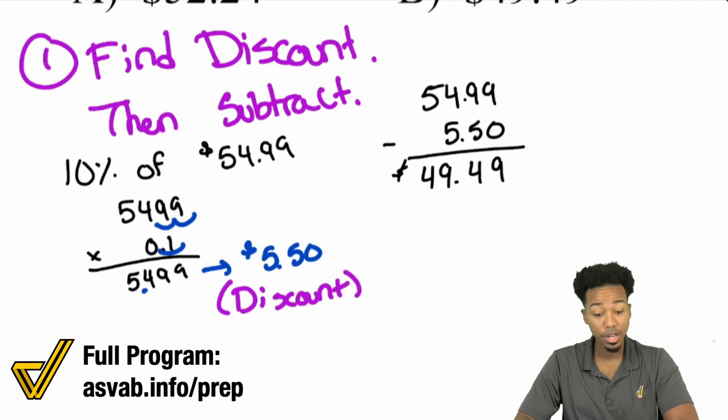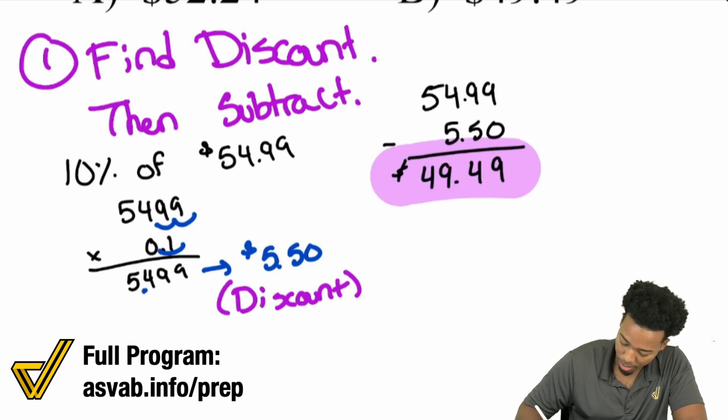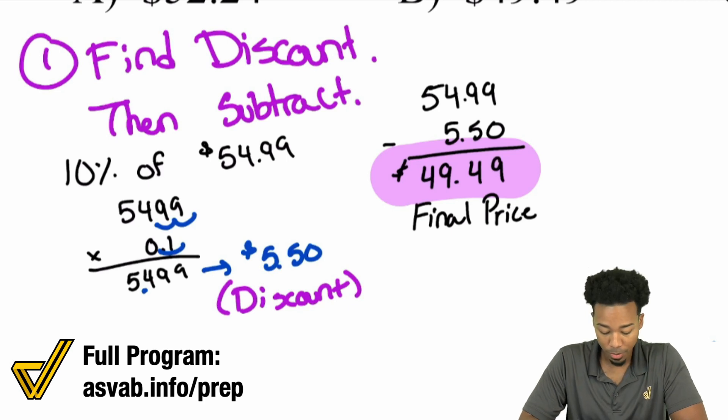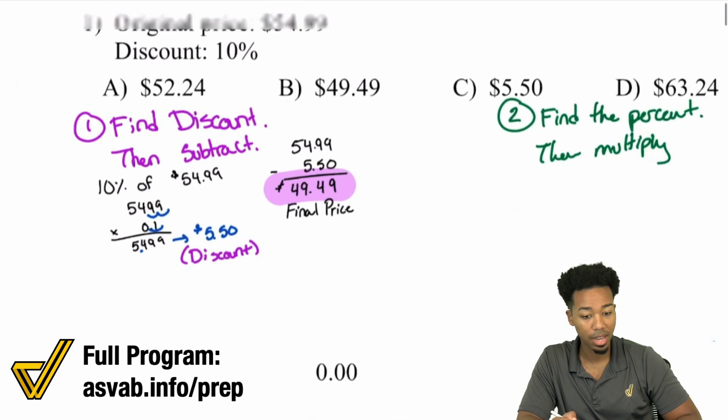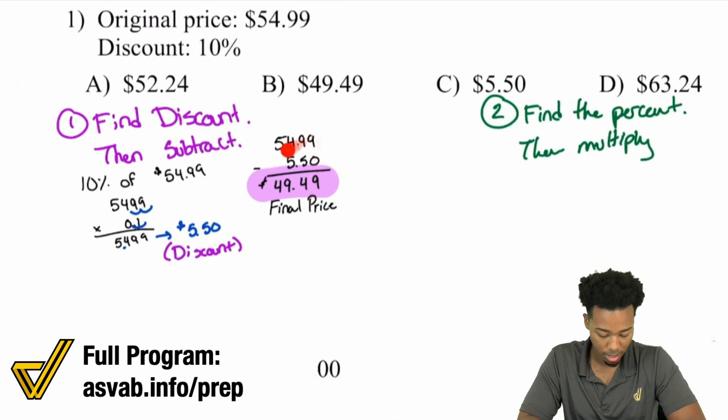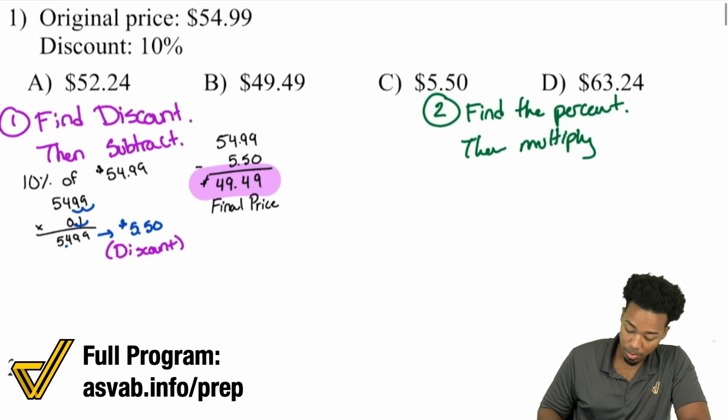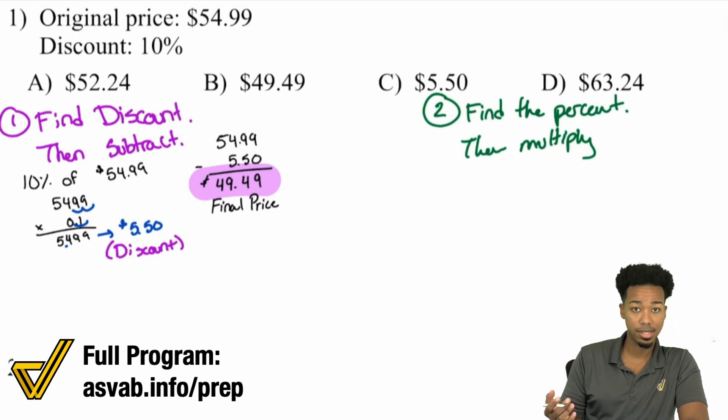That's the final answer - your final price, $49.49. This is the first way. It's not the fastest way, but it is a method. We found 10%, found the discount, and subtracted it. Now, here's a faster way: find the percent, then multiply.